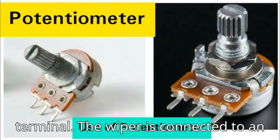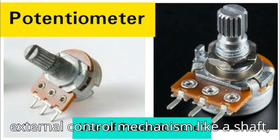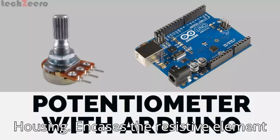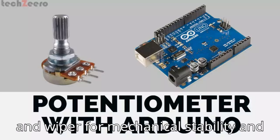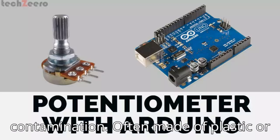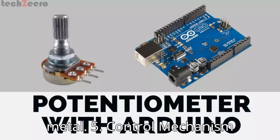Third, the wiper: the movable contact that physically slides along the resistive element. It adjusts the resistance between the wiper terminal and each end terminal. The wiper is connected to an external control mechanism like a shaft, knob, or slider. Fourth, the housing encases the resistive element and wiper for mechanical stability and protection from external damage or contamination, and is often made of plastic or metal.